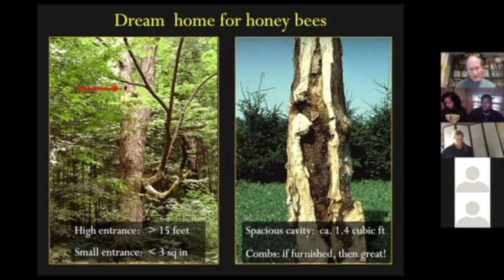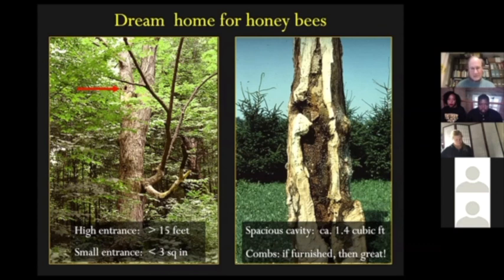Why do they want these features? That high entrance makes their nest less conspicuous to bears — where I live in the forest, there are black bears, and if the bees nest low the bears find them easily, but high up they don't. A small entrance makes the nest easily guarded. A spacious cavity — equivalent to one deep Langstroth hive body — gives them enough storage space to store up the 40 pounds of honey they need to get through the winter. And if they can find combs already in the cavity, that saves them a lot of energy and work building their new nest.